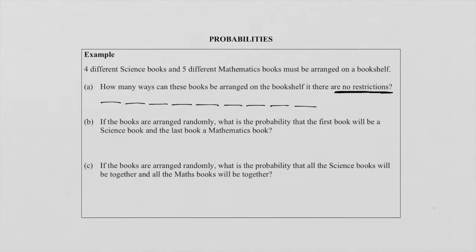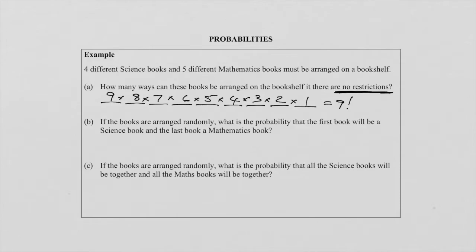We draw nine lines to represent the nine book positions. Remember, no grouping whatsoever — the books may be mixed on the bookshelf. First position, any one of the nine books can go there, then eight, because they can't repeat, then seven, six, five, four, three, two, one. When we multiply, this gives us nine factorial, which equals 362,880. Remember, in this part they did not ask us for a probability — they only asked how many ways we can arrange the books with no restrictions.